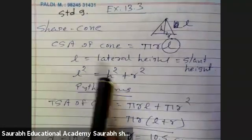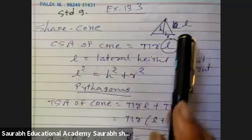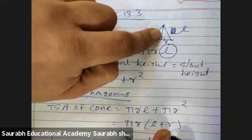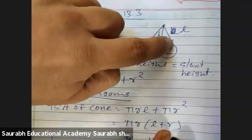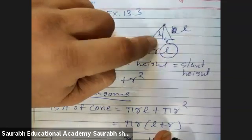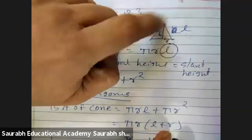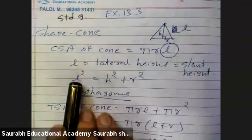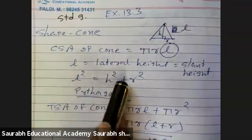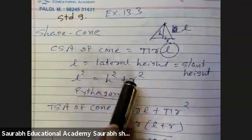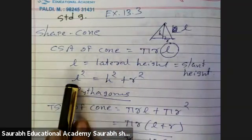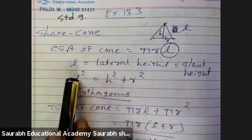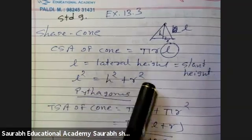L squared equals H squared plus R squared. Now, if you observe it properly, this will become a right angle triangle. So H squared plus R squared — Pythagoras theorem will apply here — equals L squared. By this formula, out of these three, if two are given, the third one can be found. Suppose H and R are given, you can find L. If L and H are given, you can find R.